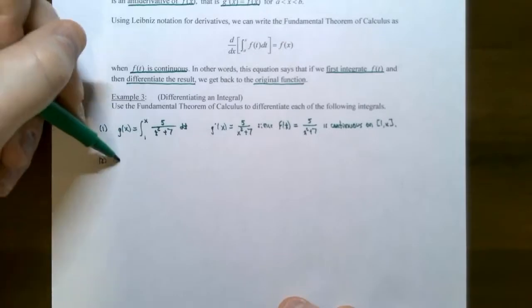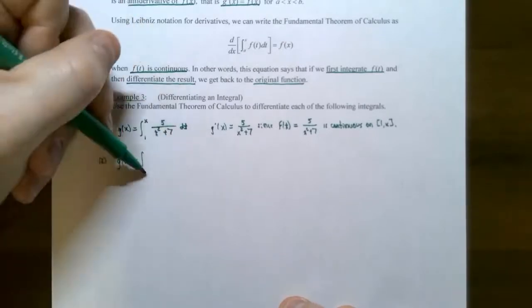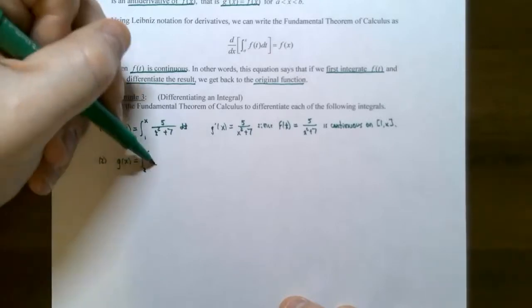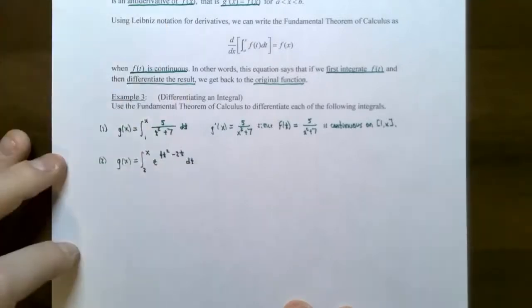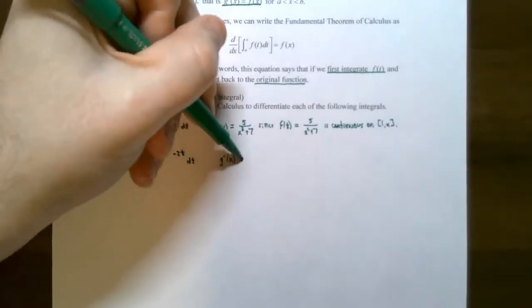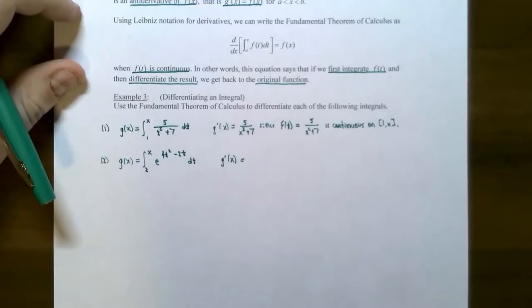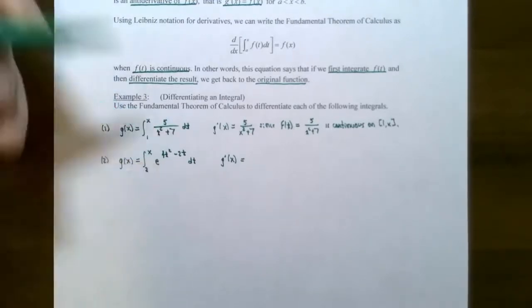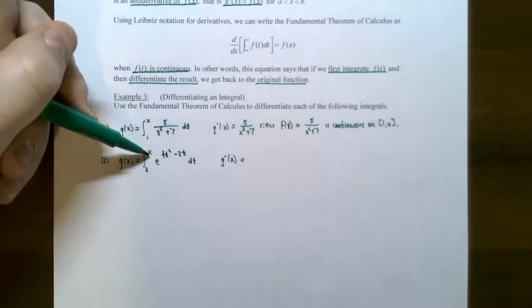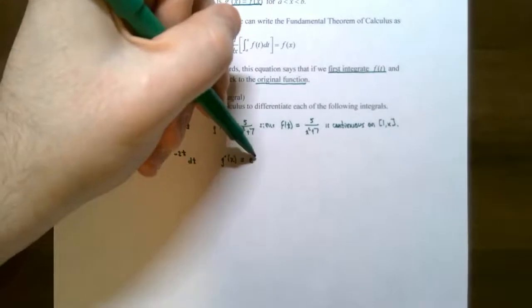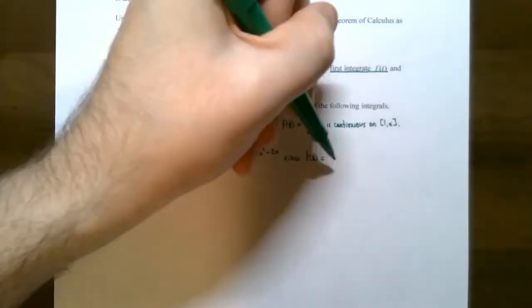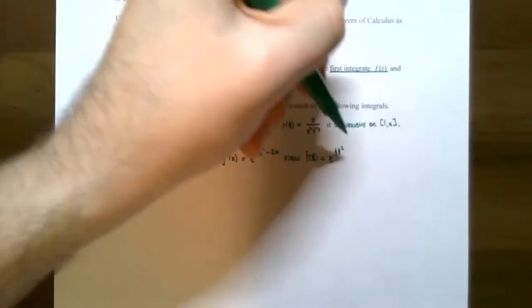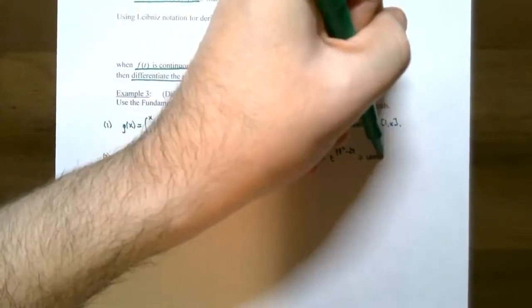Number two: g of x is the integral from two to x of e to the four t squared minus two t, dt. Again, g prime equals the integrand evaluated at the upper limit x: e to the four x squared minus two x. This is valid since f of t equals e to the four t squared minus two t is a continuous exponential function on the interval two to x.